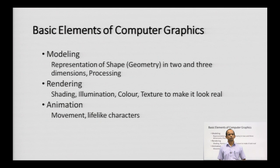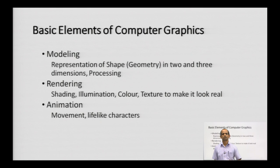There are three basic elements of computer graphics: modeling, rendering, and animation. Modeling means representing the shape. A shape can be represented in 2D or 3D. When making a line or a curve, that is a 2D representation.